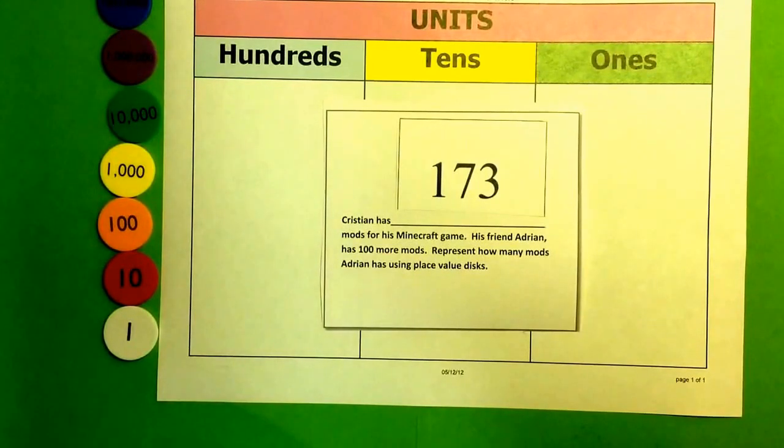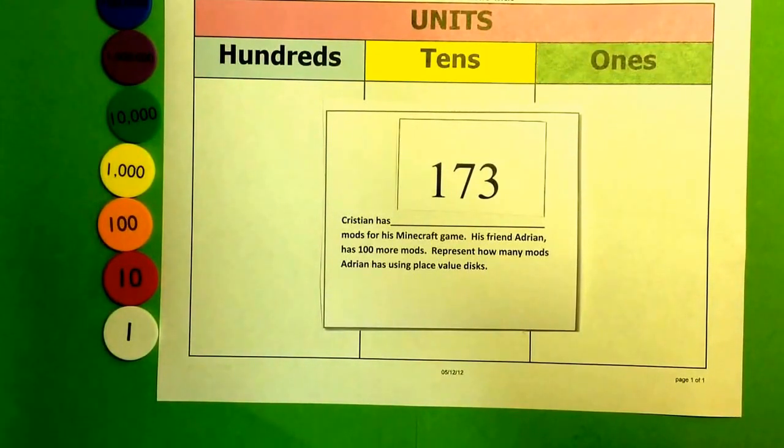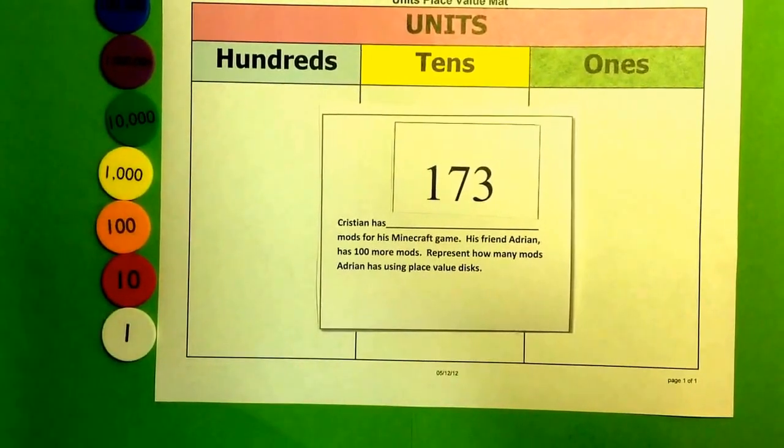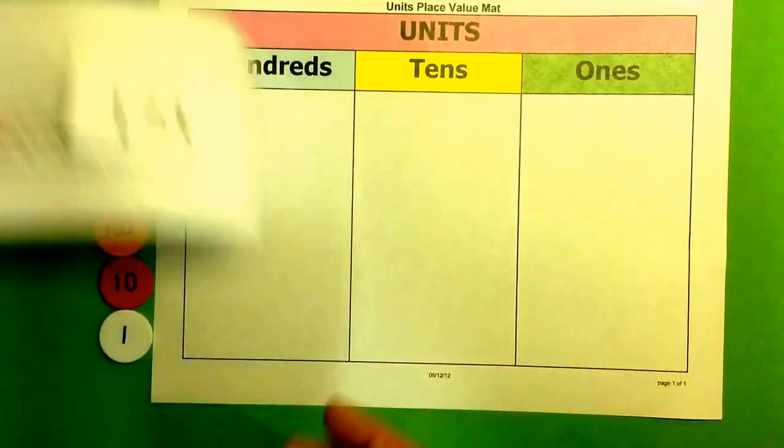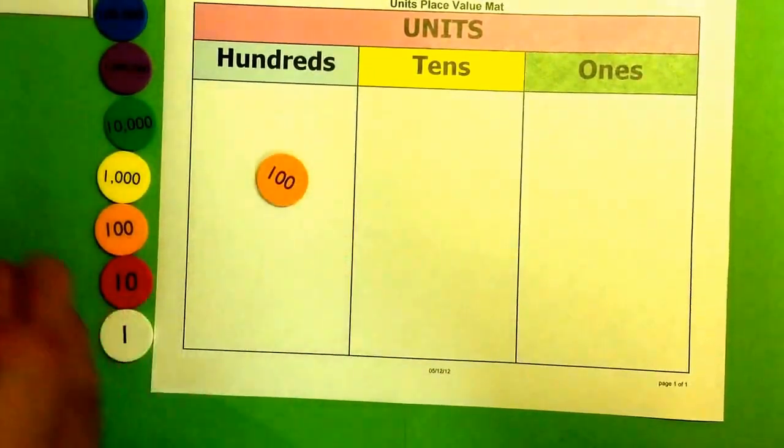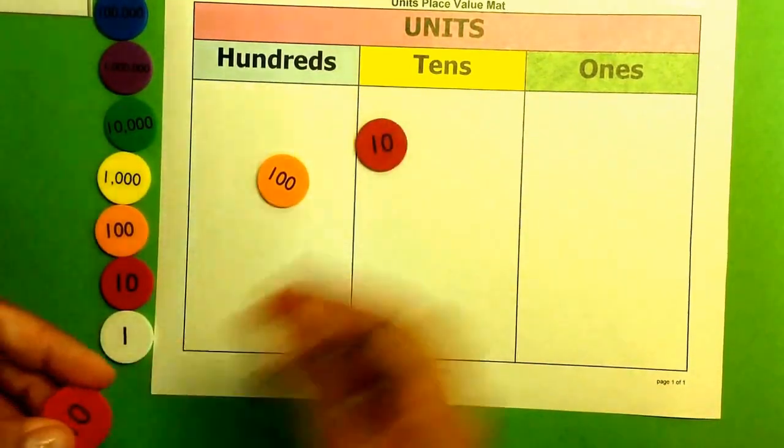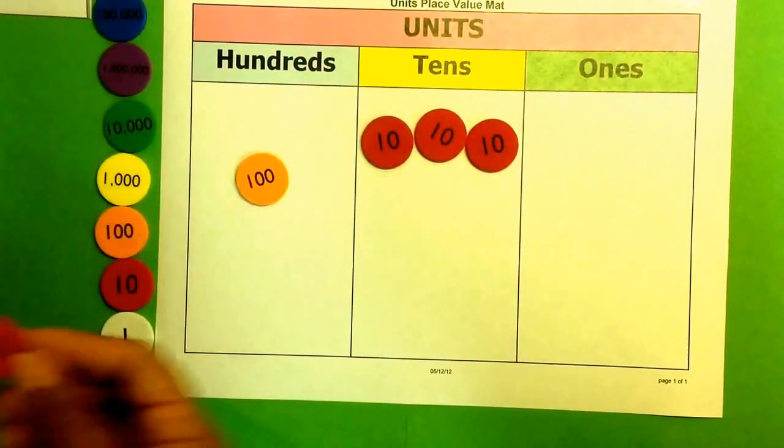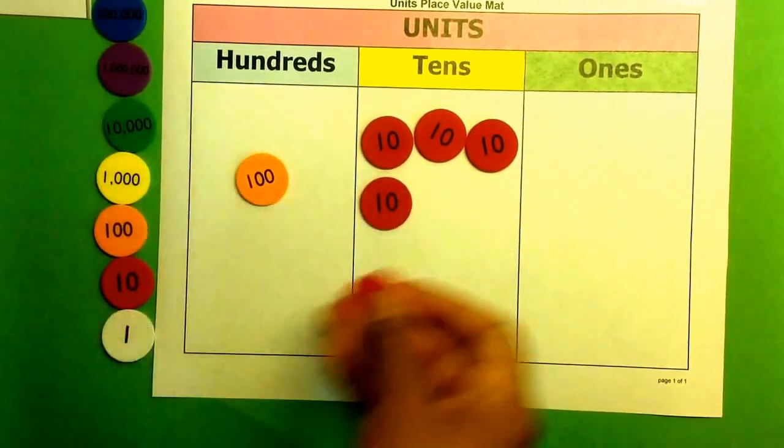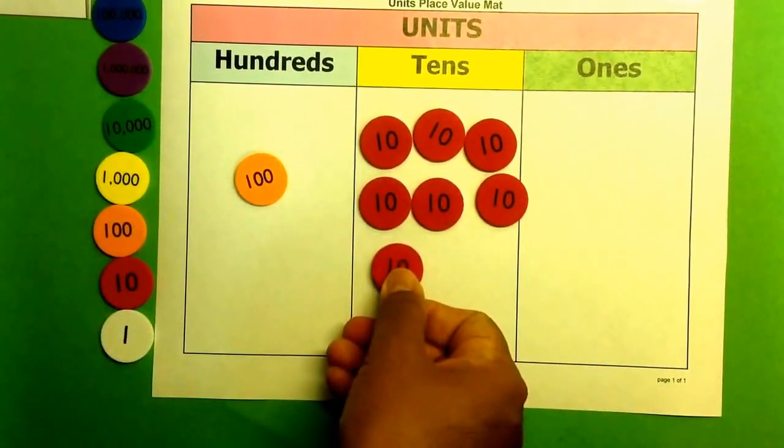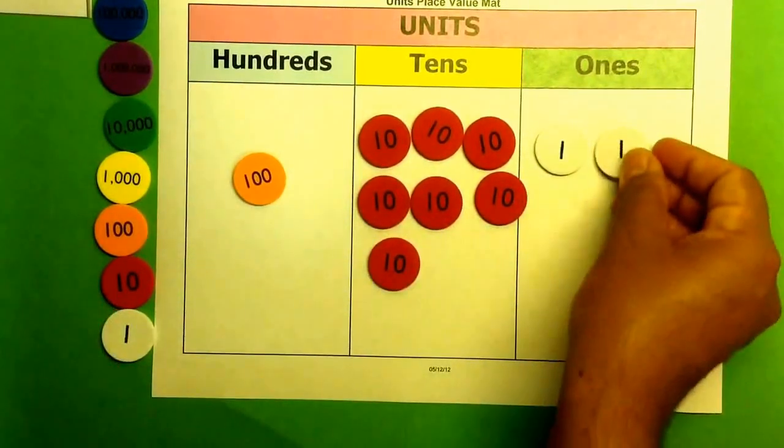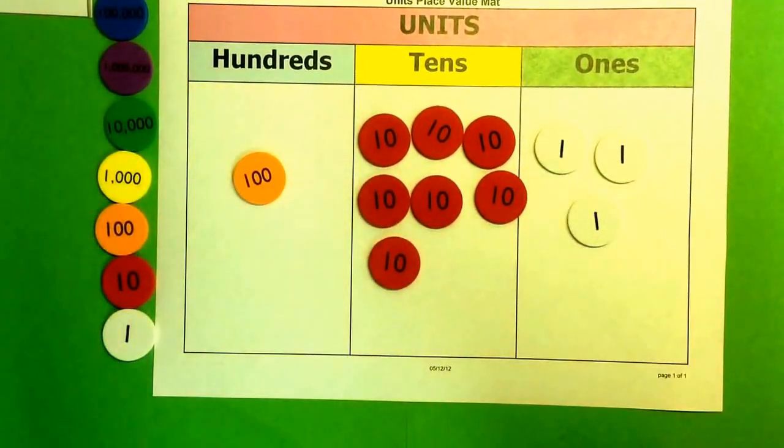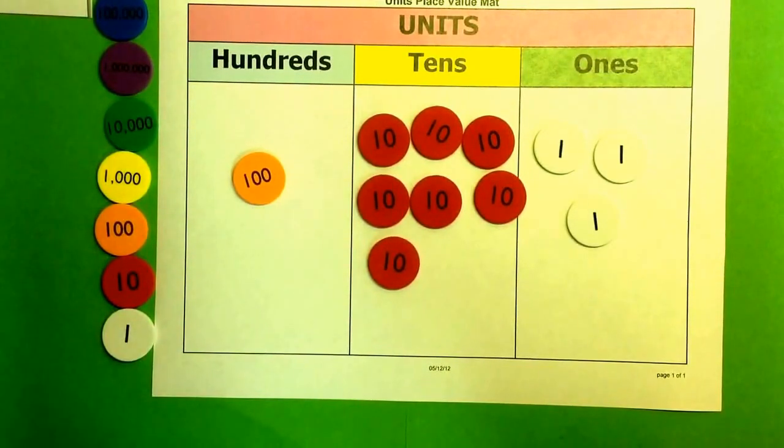Christian has 173 mods for his Minecraft game. His friend Adrian has 100 more mods. So the student now has to represent 173 and then add 100 more mods for Christian's friend Adrian. So we're going to represent 100, 10, 20, 30. There's 173, that's how many Christian has. And his friend Adrian has 100 more.